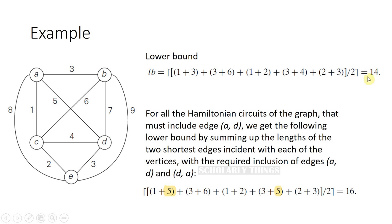But if there is a situation where you must include one particular edge, we can modify this lower bound. For example, if you must include edge AD, the lower bound will be changed like this: 1 plus 5. Initially you would include 1 and 3, but in this case you have to include edge AD, so you consider 1 and 5 as the first two shortest lengths.